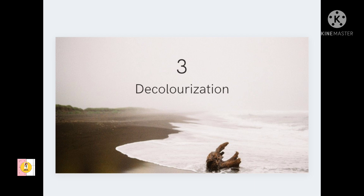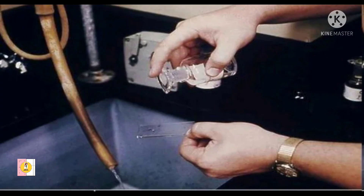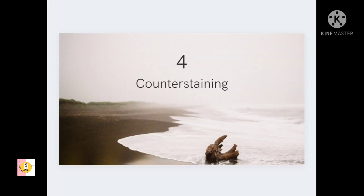The third step is decolorization. In this step, we will decolorize the smear by pouring absolute alcohol — we can use ethanol or any other alcohol — drop by drop until no more stain comes off. Then we will wash it with water.